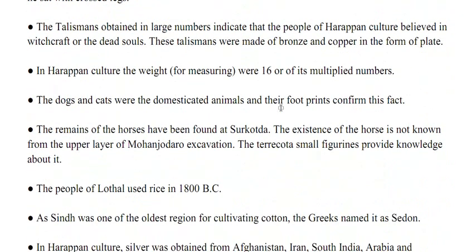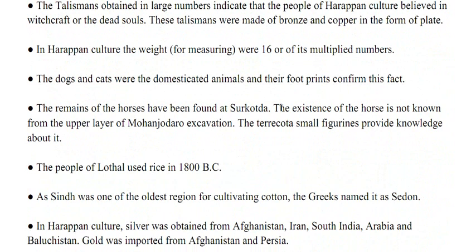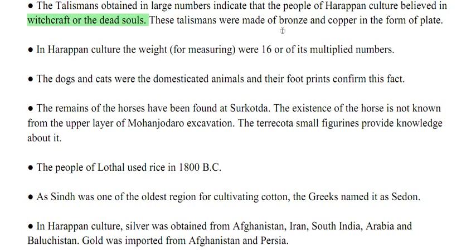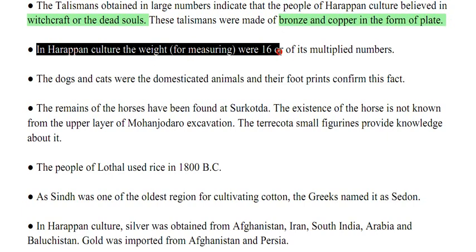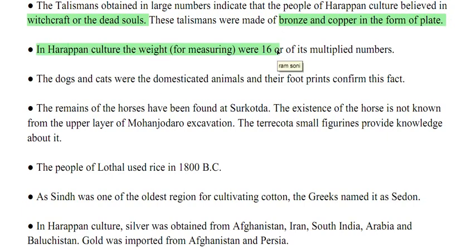The talismans obtained in large numbers indicate that people of Harappan culture believed in witchcraft or dead souls. These talismans were made of bronze and copper in the form of plates. In Harappan culture, weights for measuring were 16 or its multiples — an important fact to remember. Dogs and cats were domesticated animals, confirmed by their footprints.